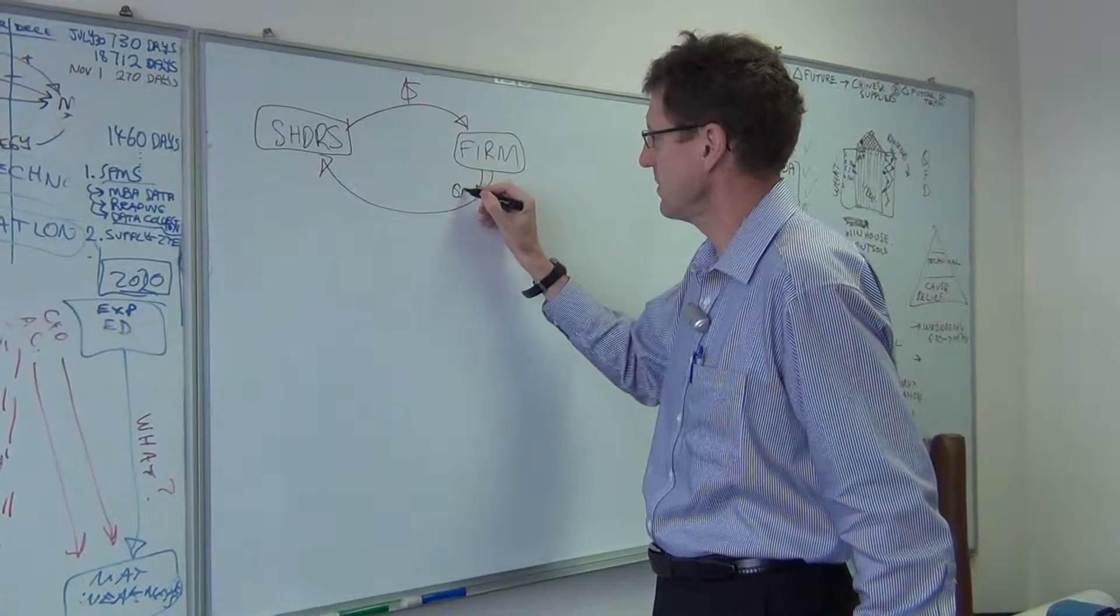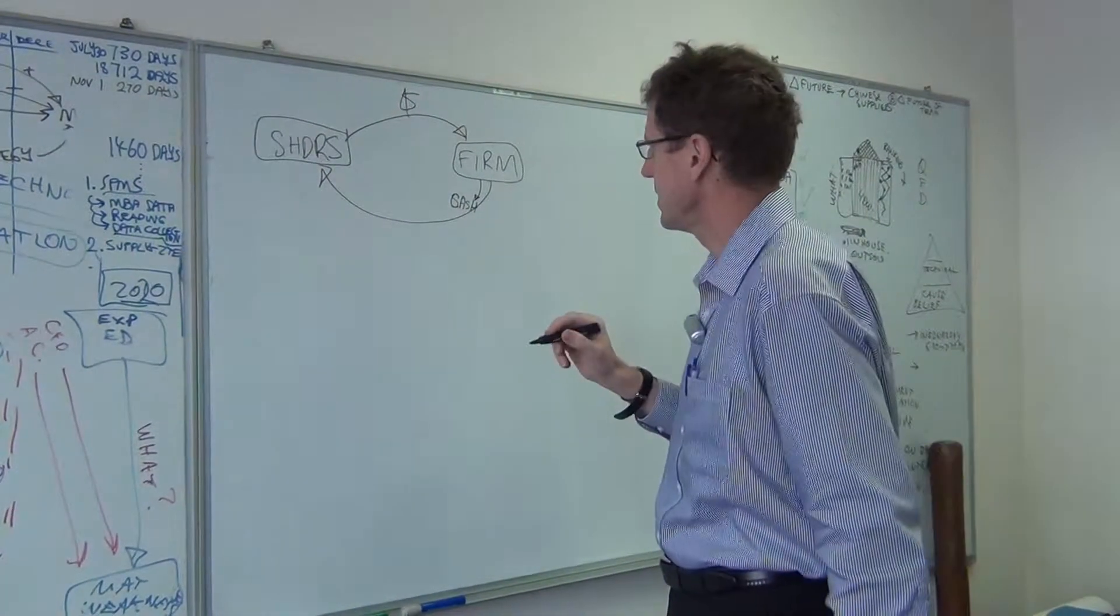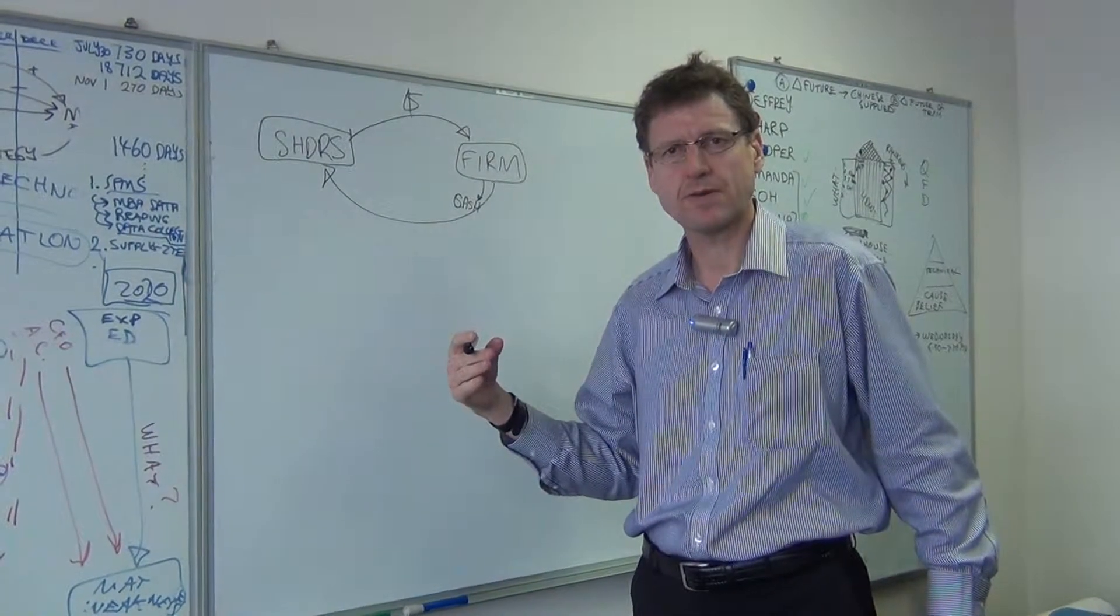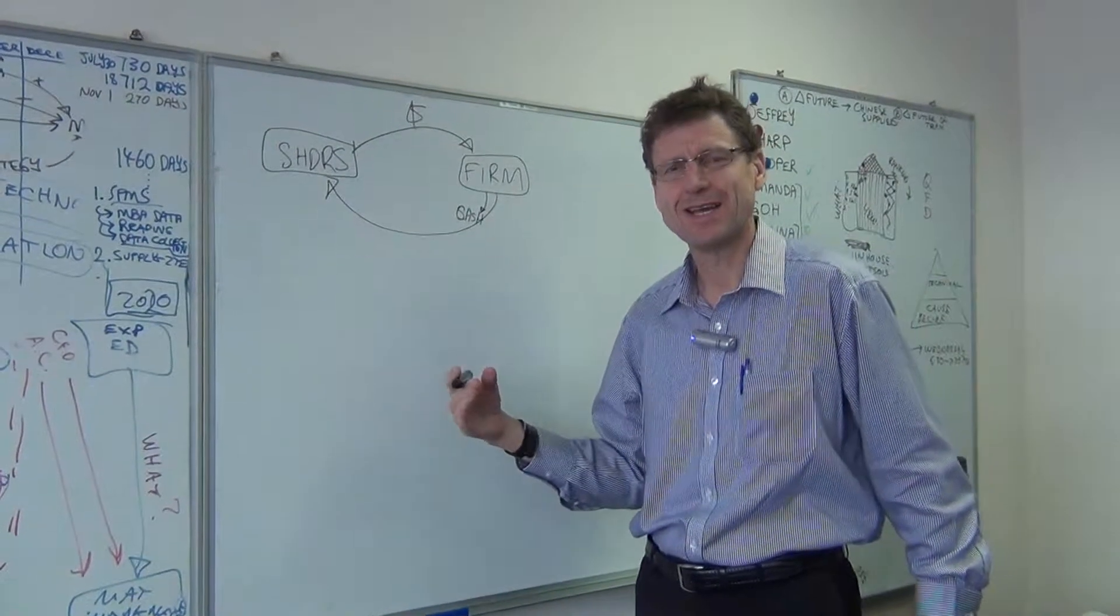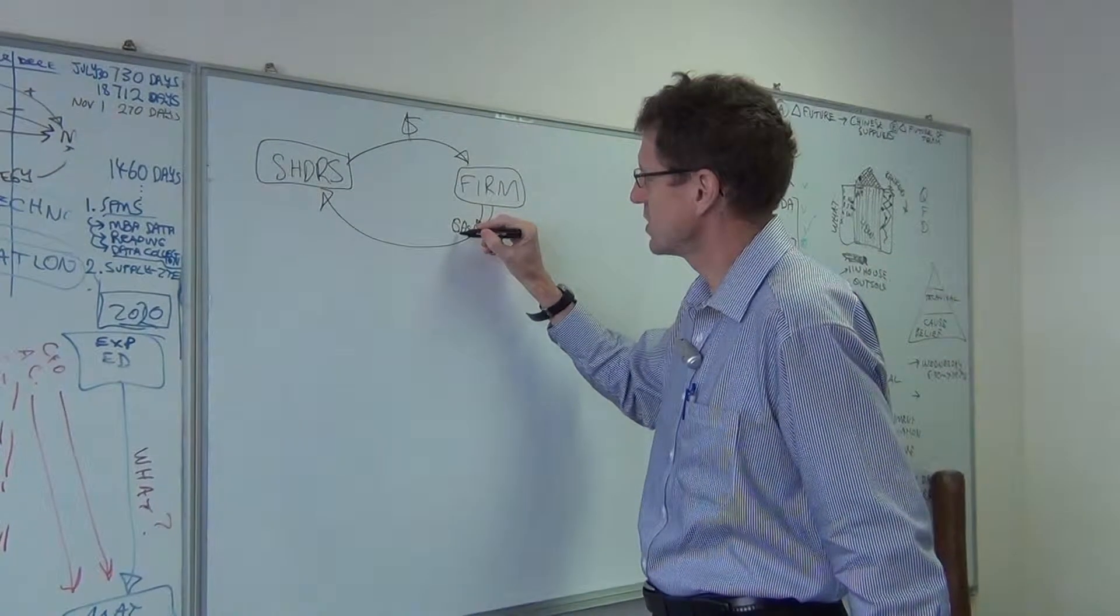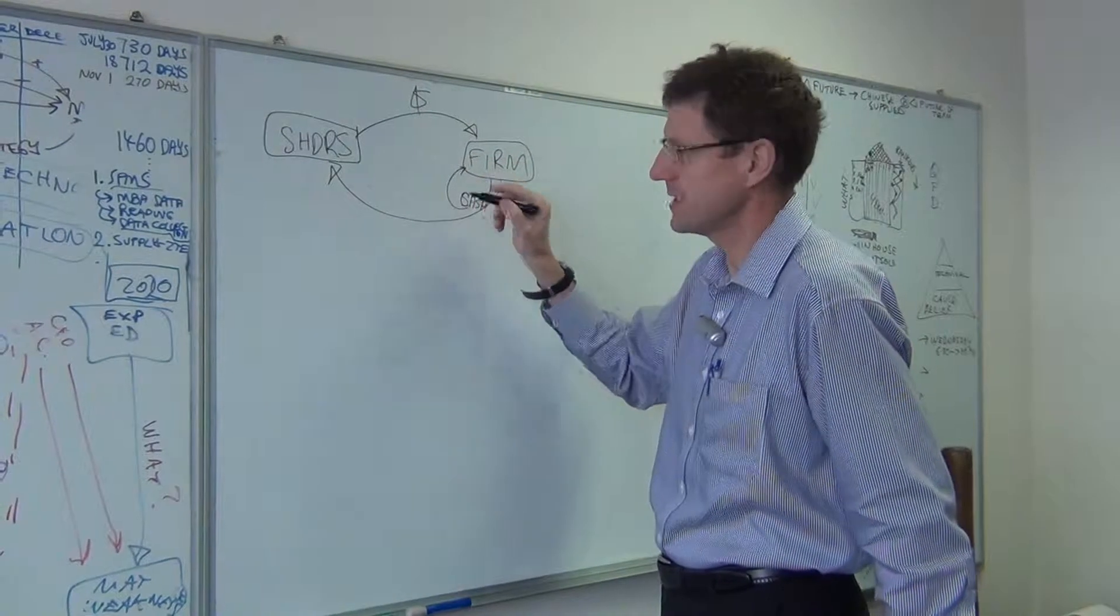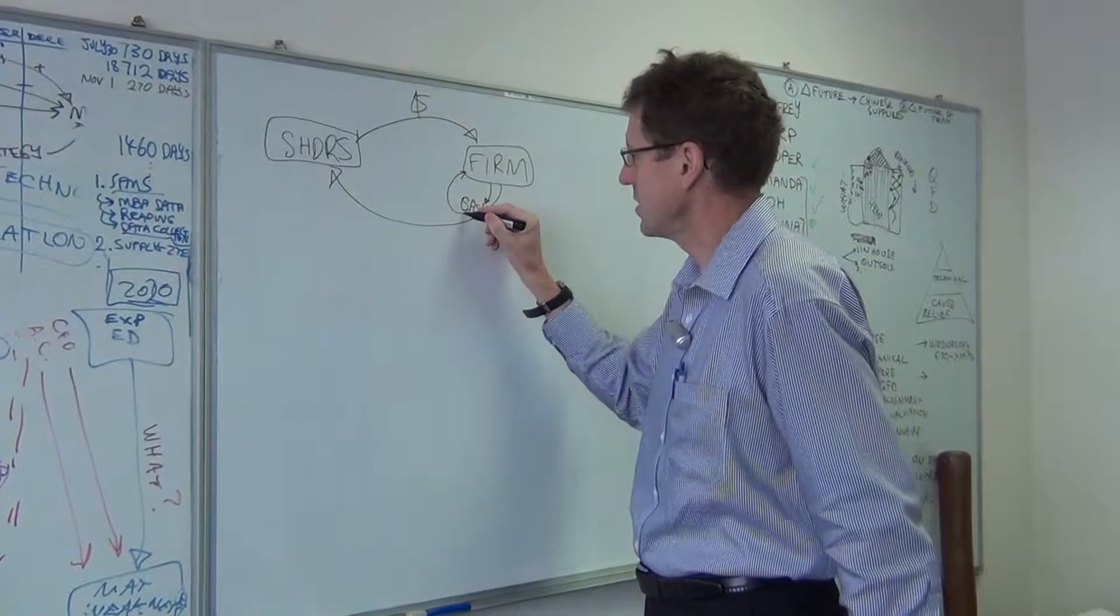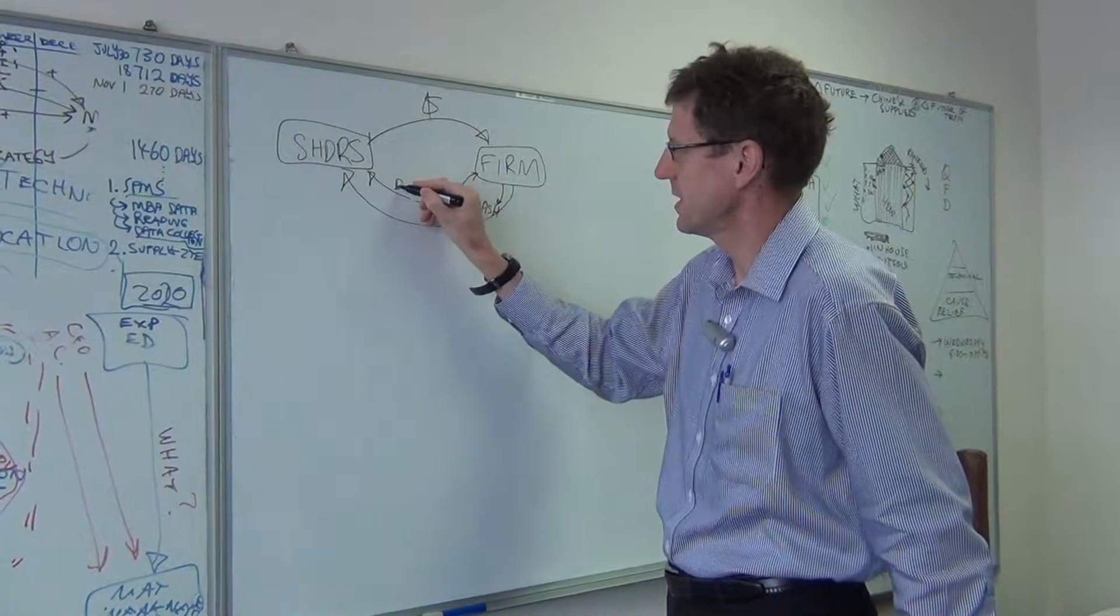And the big question is, what does the firm do with that cash? And many of us know with Apple, they have a huge stockpile of cash and people keep on saying pay a dividend, pay a dividend, pay a dividend. They haven't decided to do that yet. But the big question is, with that cash, the firm may decide to reinvest that back in terms of capital equipment, or they may choose to pay that cash in terms of a dividend.